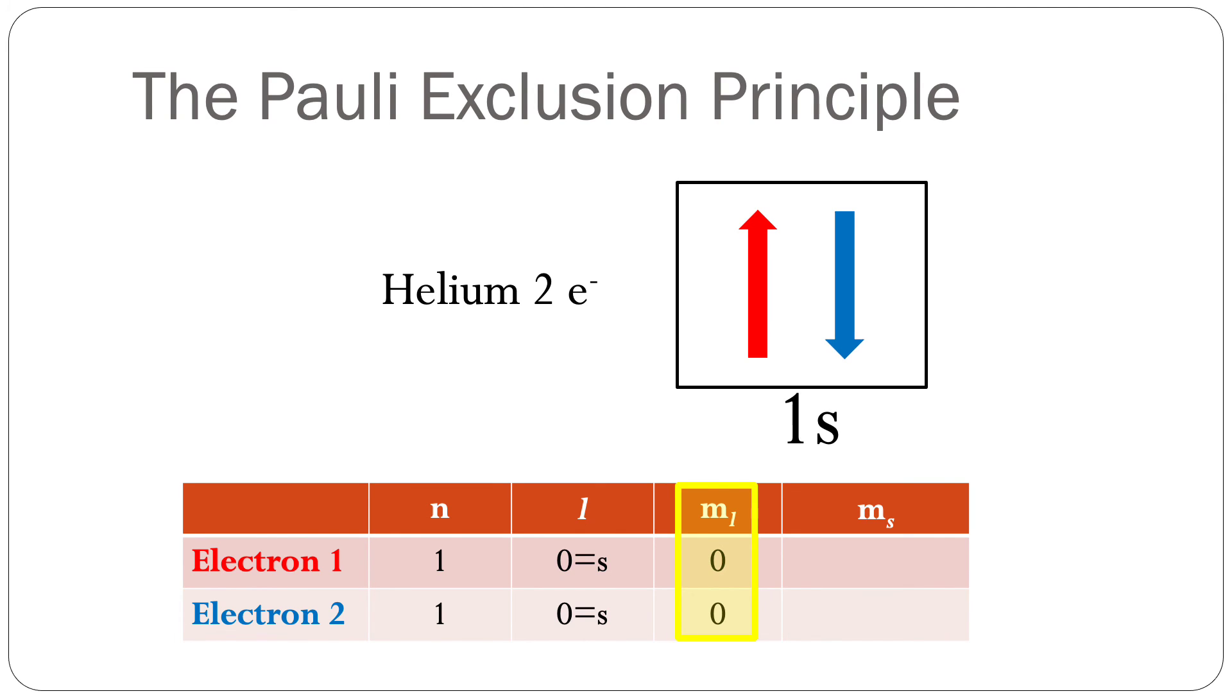So far, both electrons can be assigned the combination of one, zero, zero. But the Pauli exclusion principle states that no two electrons can have the same set of four quantum numbers.